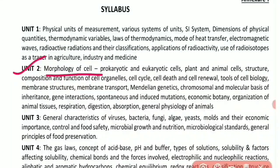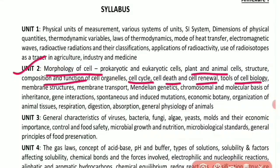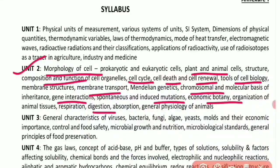Unit 2 covers morphology of the cell, prokaryotic and eukaryotic cells, plant and animal cells, structure and composition and function of cell organelles, cell cycle, cell death and cell renewal, tools of cell biology, membrane structure and transport, Mendelian genetics, chromosomal and molecular basis of inheritance, spontaneous and induced mutation, organization of animal tissue, respiration, digestion, absorption, and general physiology of animals.